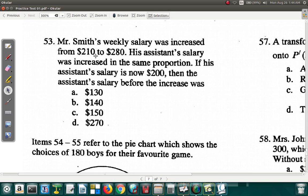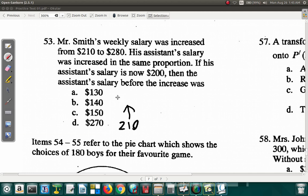His assistant's salary was increased in the same proportion. So Mr. Smith went from $210 up to $280. If his assistant's salary is now $200, then the assistant's salary before the increase was - we don't know what it was before it went up to $200. Let's say it's X. They say it's in the same proportion.